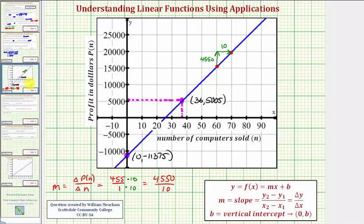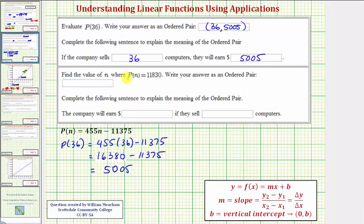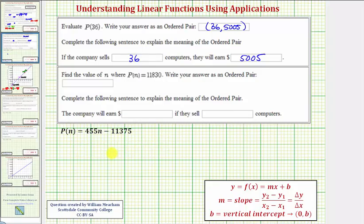And for our last question, find the value of n where p of n equals 11,830. And we're asked to write this as an ordered pair. So now we're given the function value p of n, we want to find n. So if p of n is equal to 11,830, we'll substitute this value for p of n, and then solve for n.